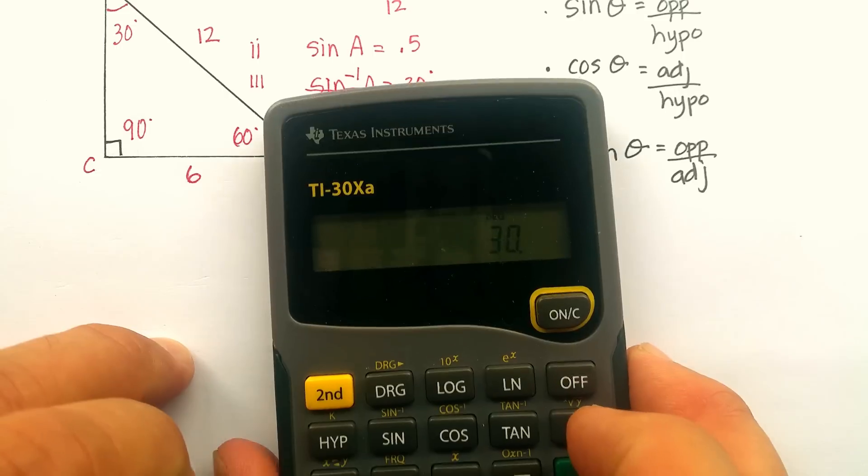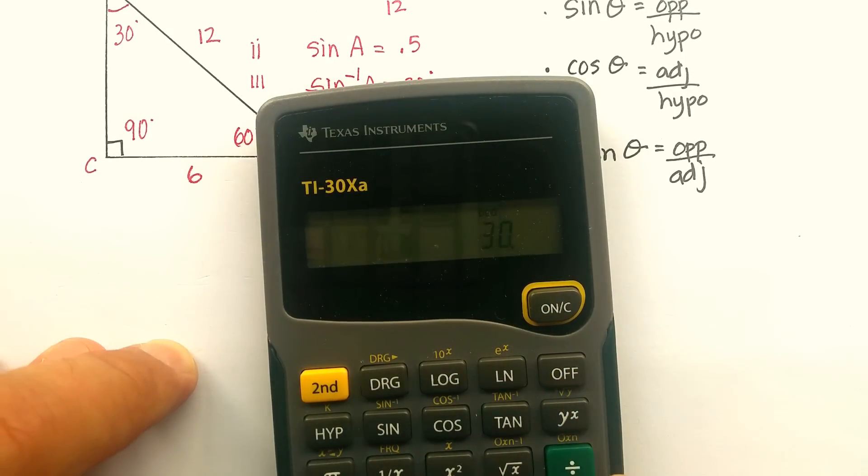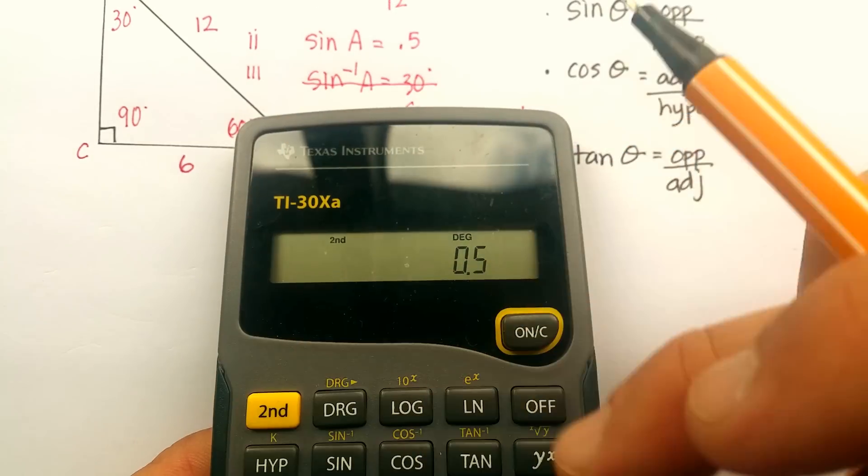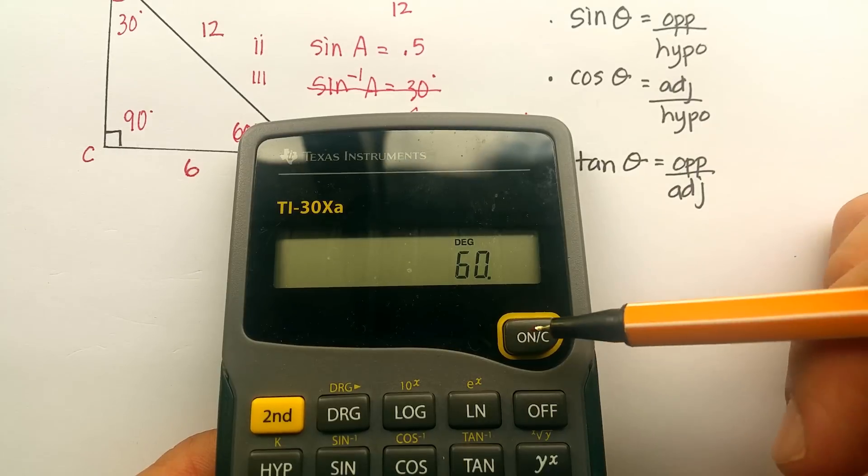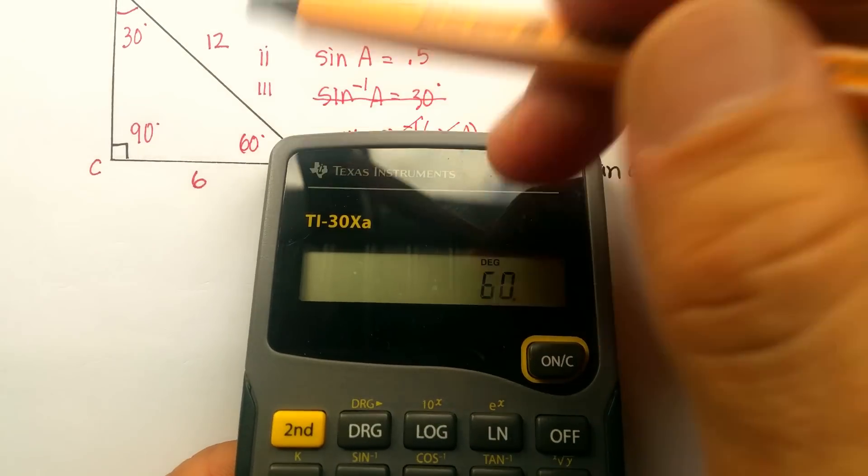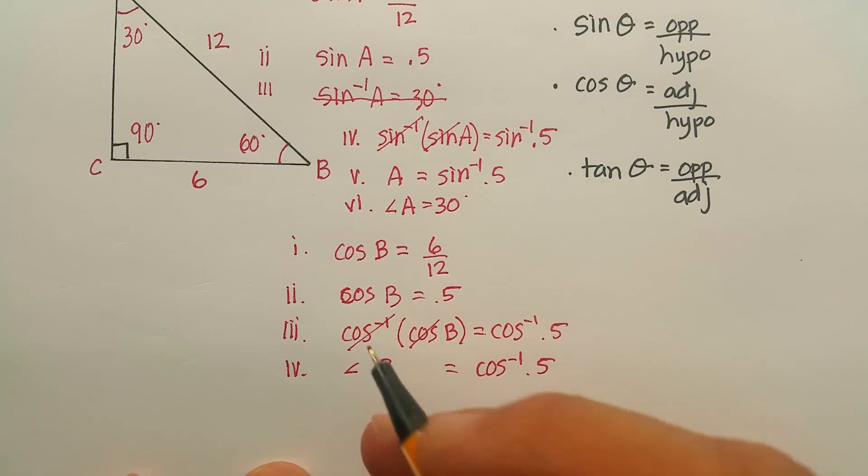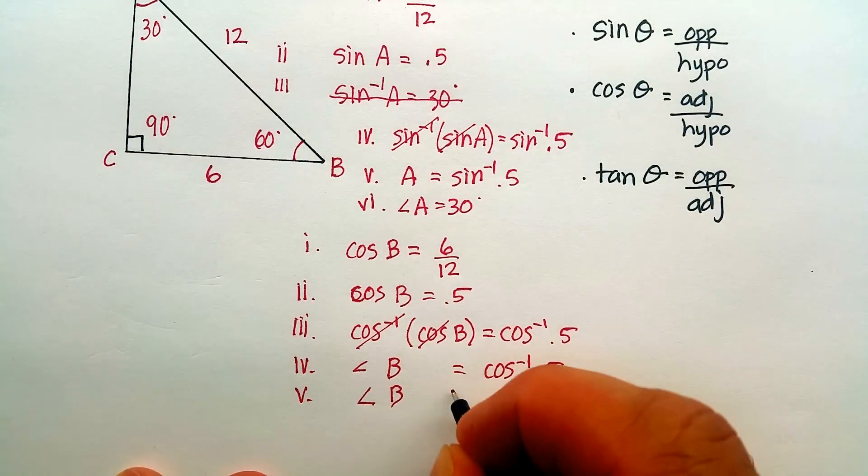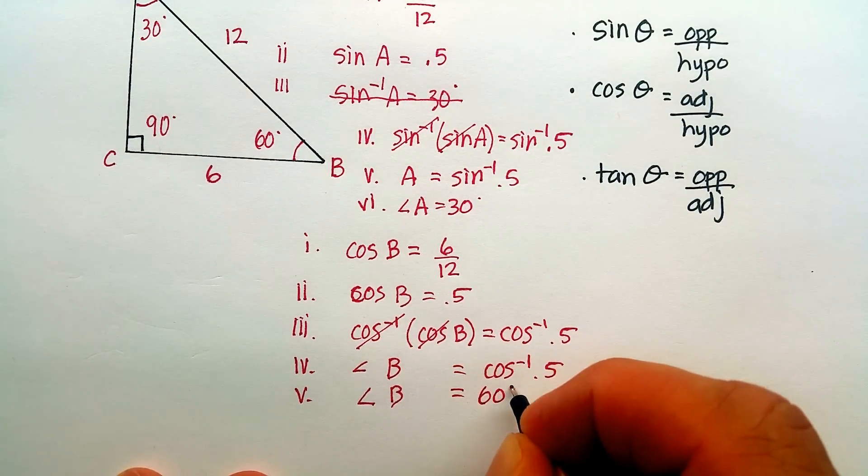Let's see if I get 60 now. So, 0.5. I hope you can see that. Yep. And I'm going to go to my inverse cosine, and sure enough, it shows up as 60, which is what we figured out here. So, this turns out to be angle B is equal to 60.